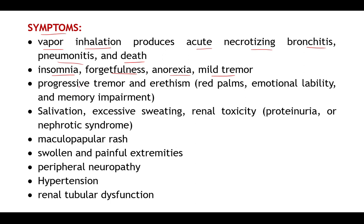As the poisoning progresses over chronic time periods, progressive tremors may continue over a period of time, or erythism — a characteristic symptom of mercury poisoning — may occur, which is reddening of the palms. The person may also be emotionally disturbed, with memory impairments. Apart from this, excessive salivation and sweating may take place, or renal toxicity characterized by proteinuria — appearance of protein in the urine — or nephrotic syndrome may get precipitated.